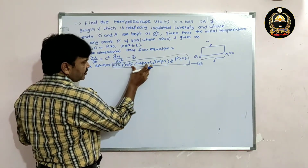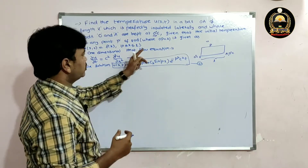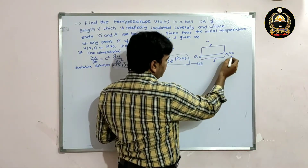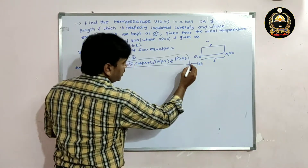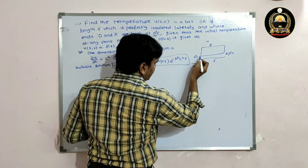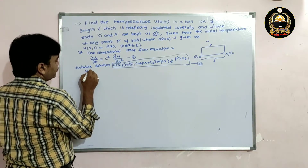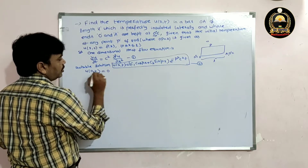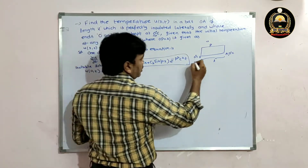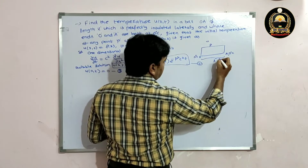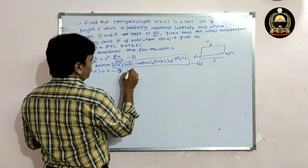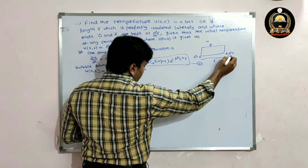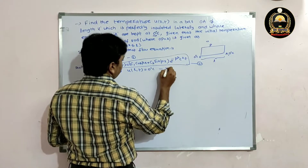Now we find C₁ and C₂ using the given conditions. Both ends are maintained at zero degrees centigrade, so the boundary conditions are: u(0, t) = 0 — this is condition three — and u(L, t) = 0, since the bar has length L — this is condition four.